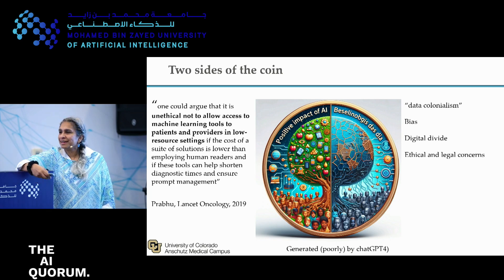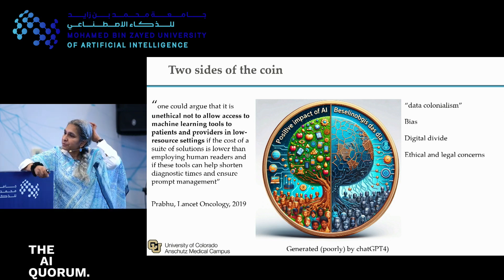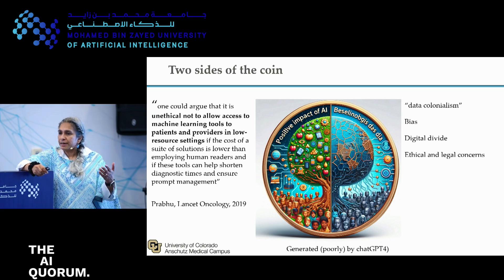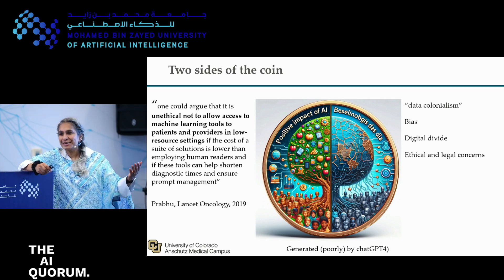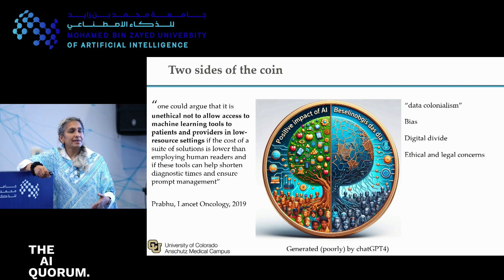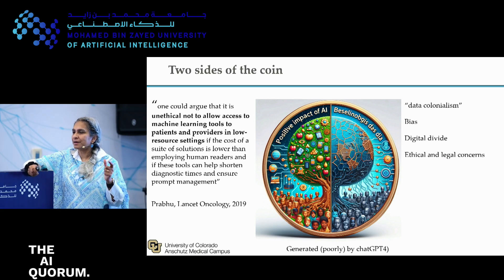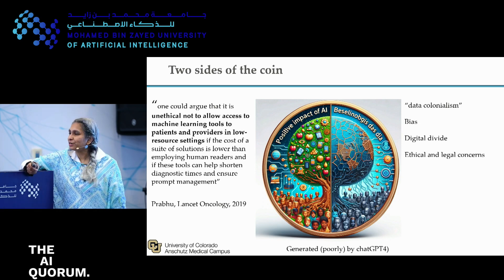I was trying to get a generative model to give me a good image — I failed completely. But I wanted to have two sides of this coin. It is unethical to not allow AI to be used in places where it's needed: if you have a model that is good and better than what is happening locally, then it is our moral obligation to put it out there. On the flip side, we have all these concerns about bias, ethics, and the notion of digital divide. That is something we think a lot about: when is it good enough to deploy, and what are the things we have to be worried about? Thank you.